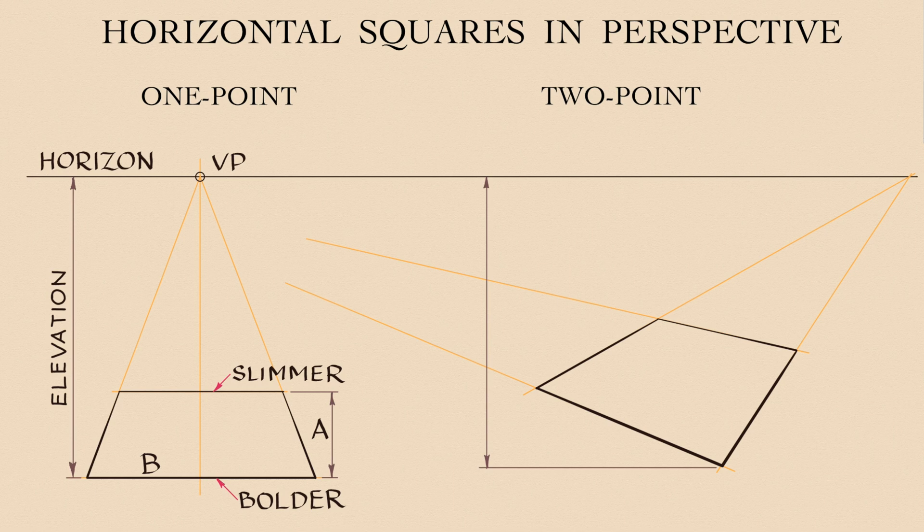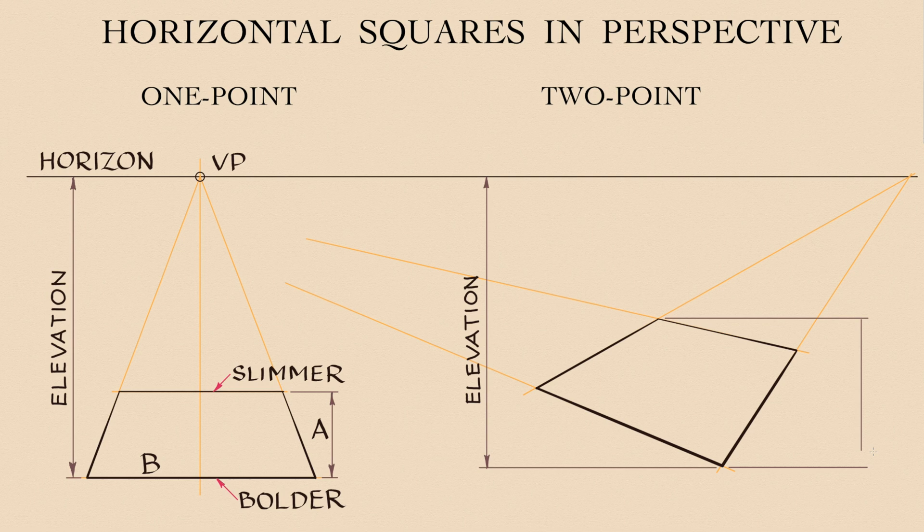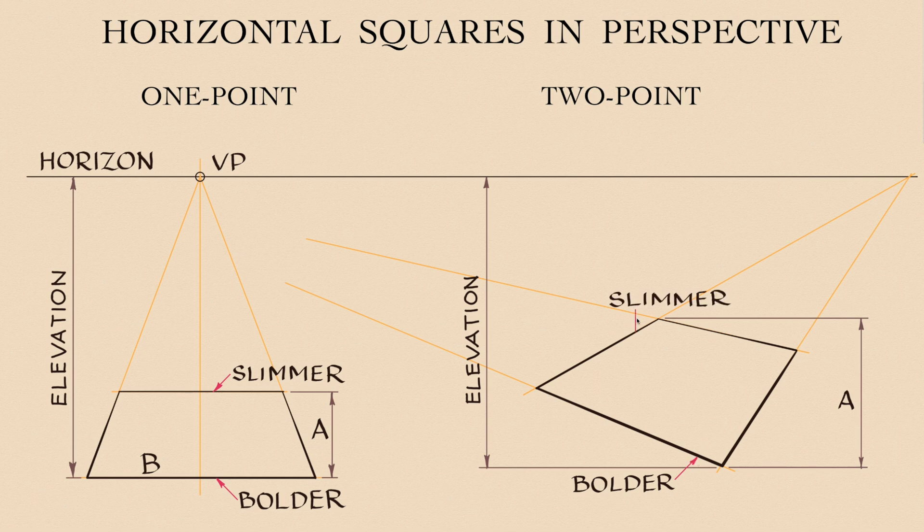Once again, the distance to the horizon is elevation. The depth is marked again as A. The frontal outline of this square is bolder because it is closer to a viewer, and the rear outline is slimmer.